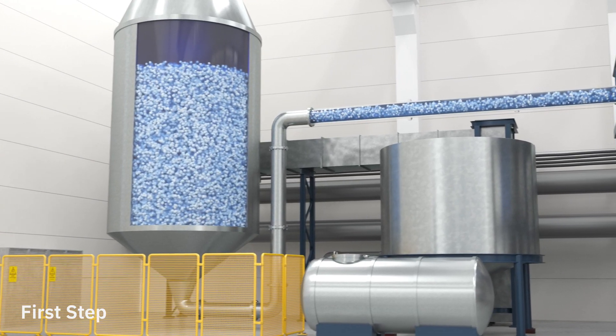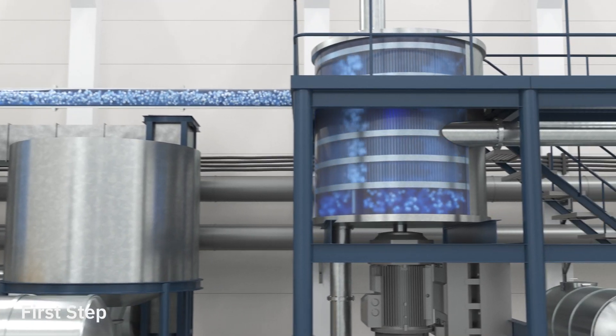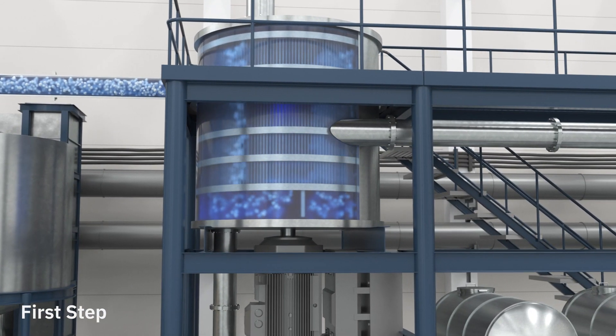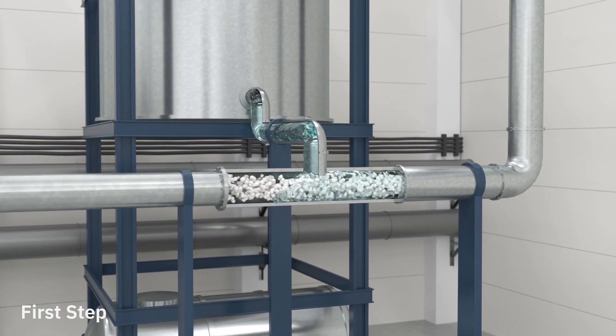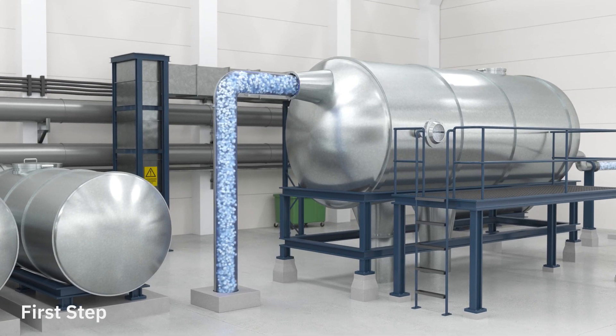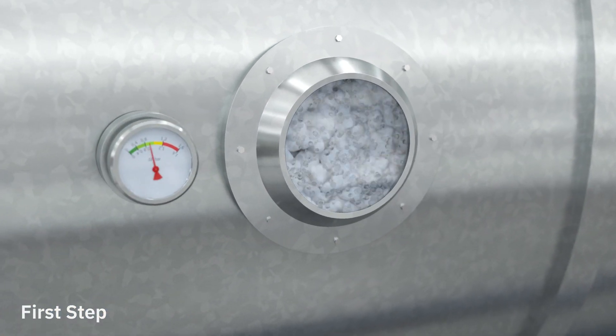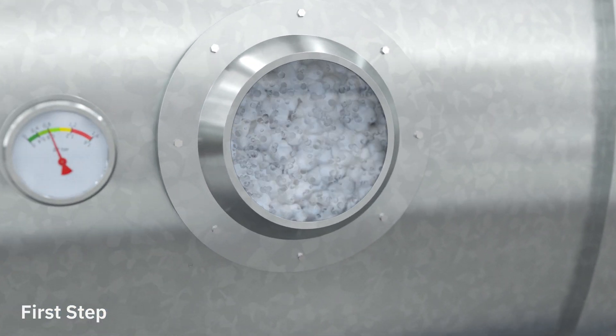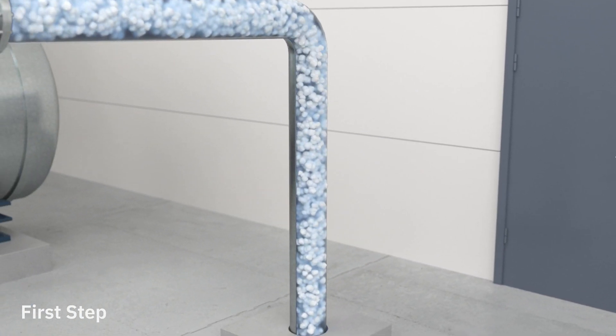When the pulp has been prepared in the TMP line, finalized with chemicals and fillers according to the recipe and screened for the last time, the pulp is then diluted with water and pumped into a de-aerator to separate air bubbles in the pulp. Now the pulp is ready to be transformed to paper in the paper machine.